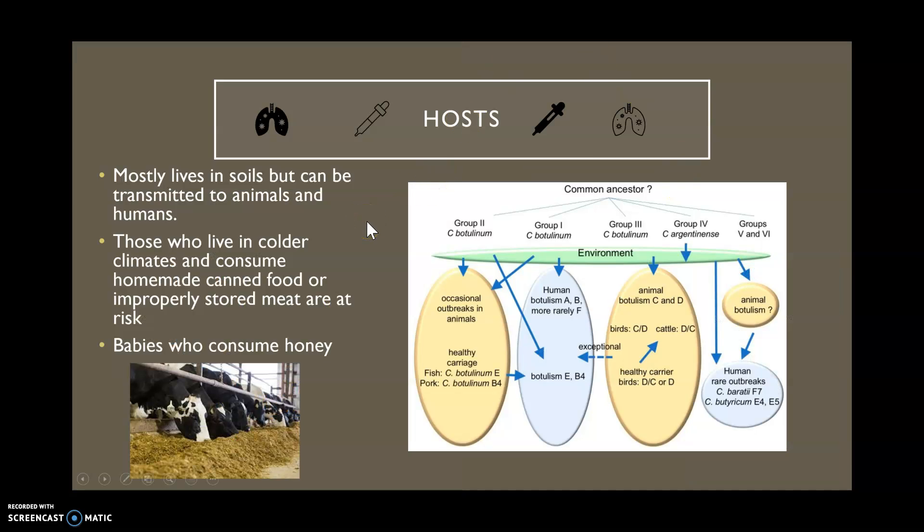The hosts, there are several hosts, mainly animals, obviously humans. This diagram here is super helpful since there are several groups and several toxinotypes that can occur from this bacteria. The genes for this toxin come from plasmids and there's a lot of research on the plasmids and how they're changing and transferring. Fish and pigs can carry it healthily. Also, birds was a big one. Animal botulism usually comes from type C and D. Humans is going to be A and B and rarely F.